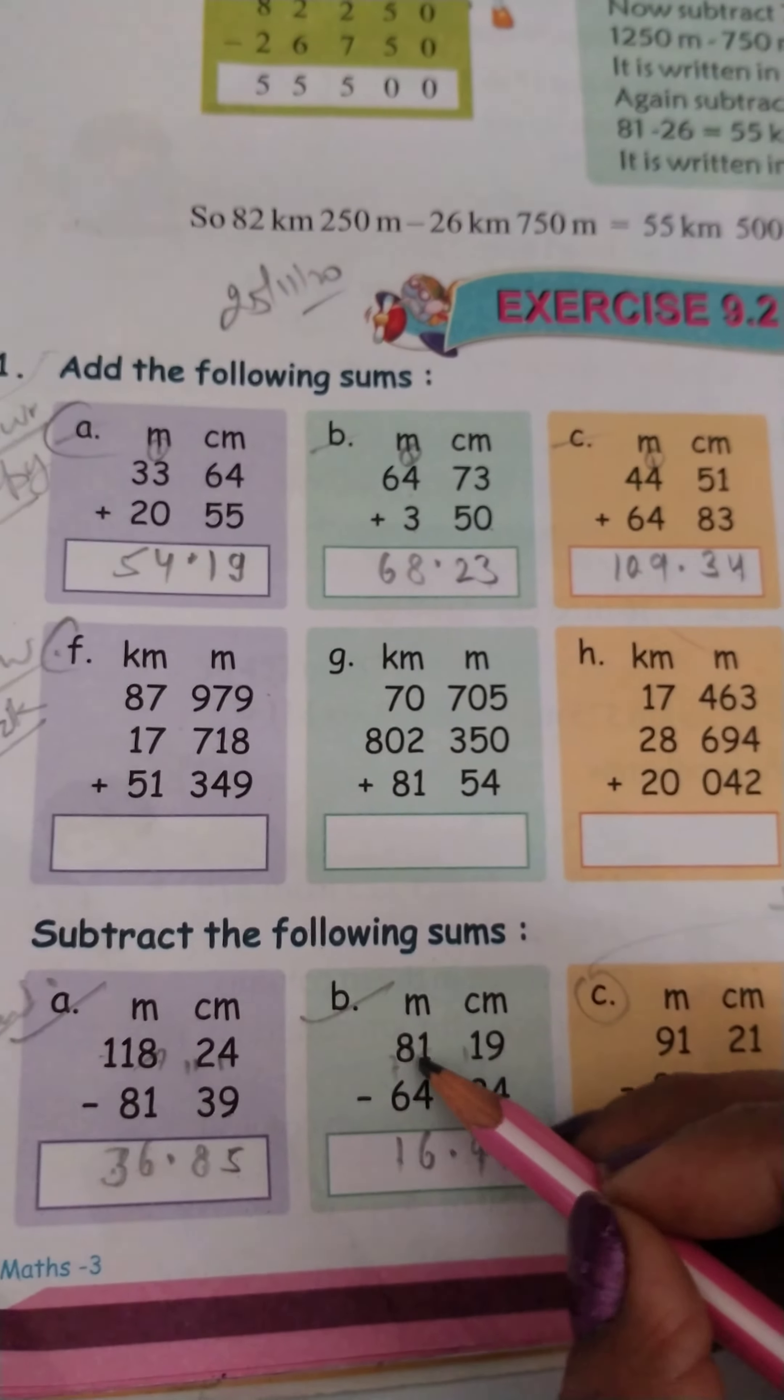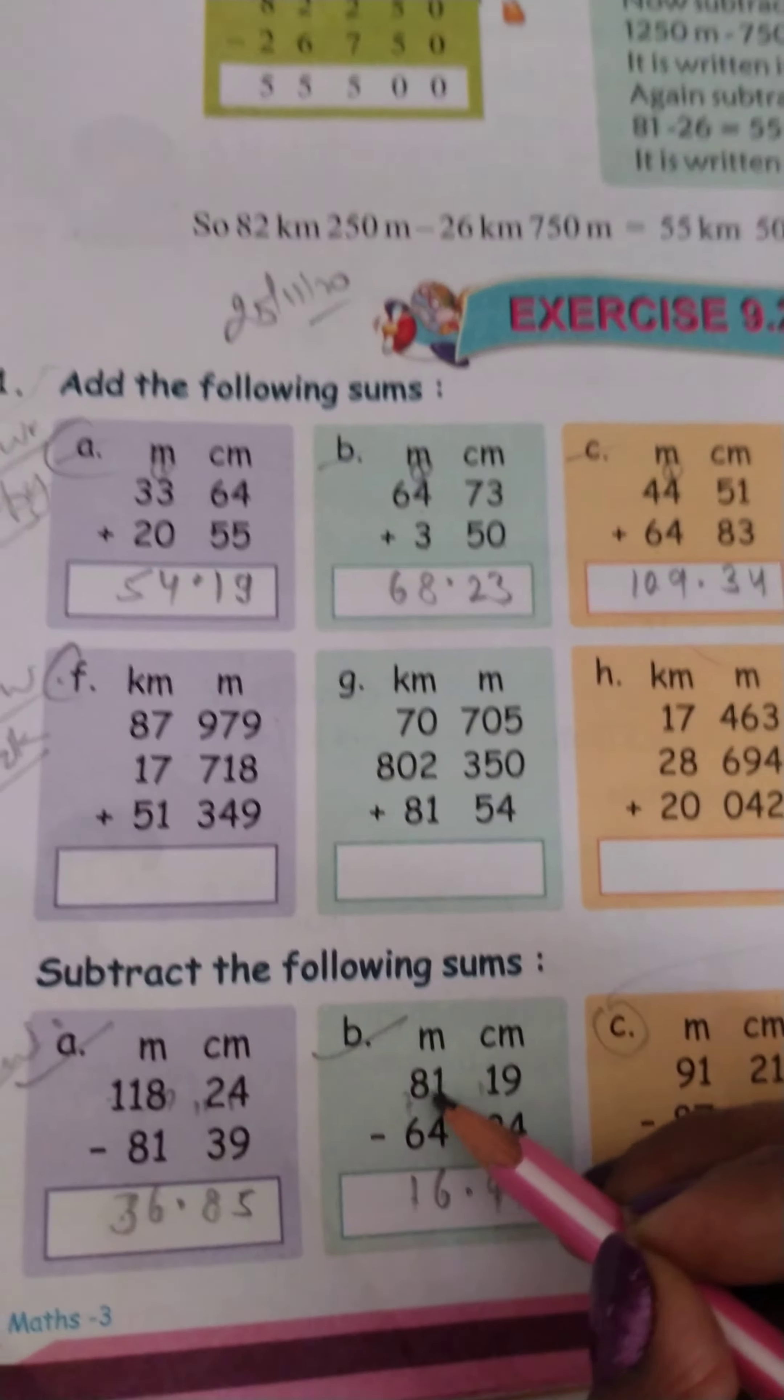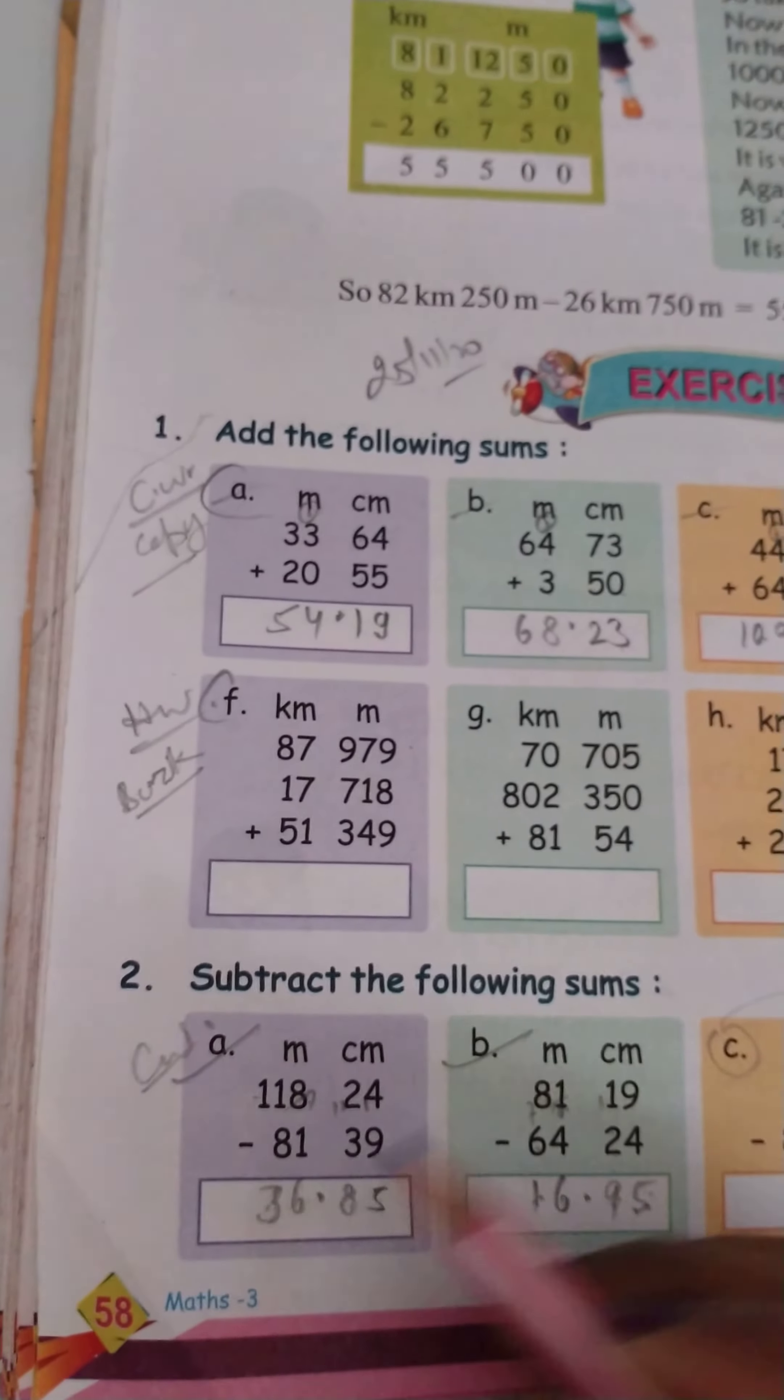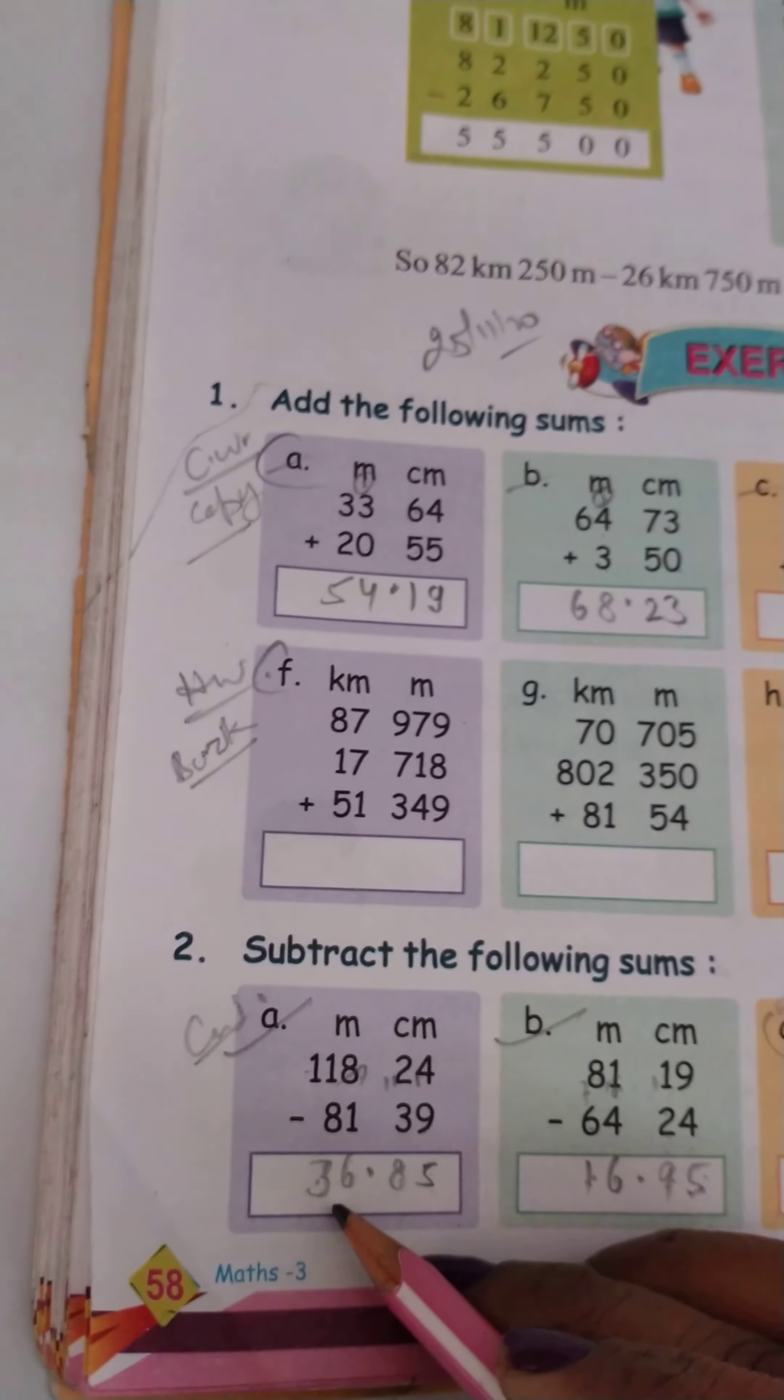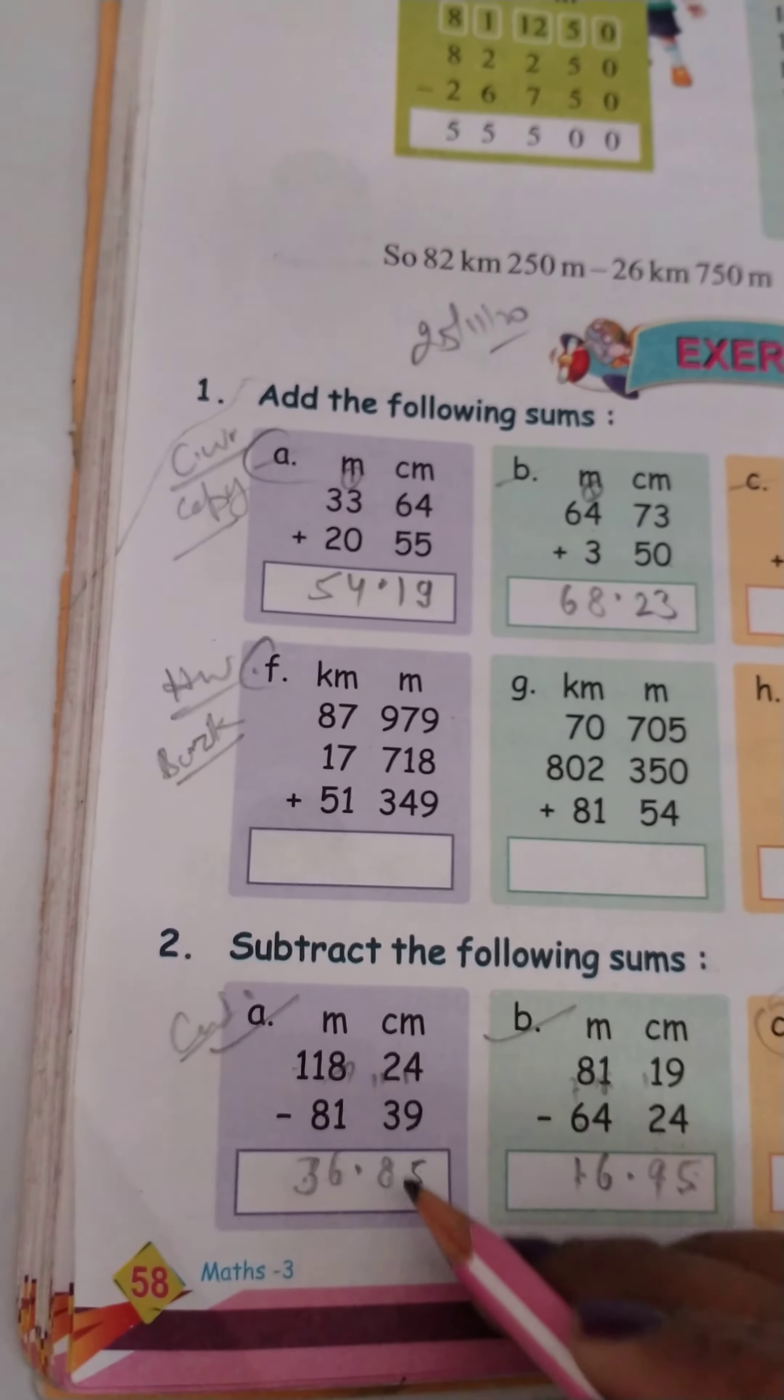Here we have 0. 10 minus 4 is equal to 6. And 7 minus 6 is equal to 1. So this answer is 16 meters 95 centimeters. First one is 36 meters 85 centimeters.